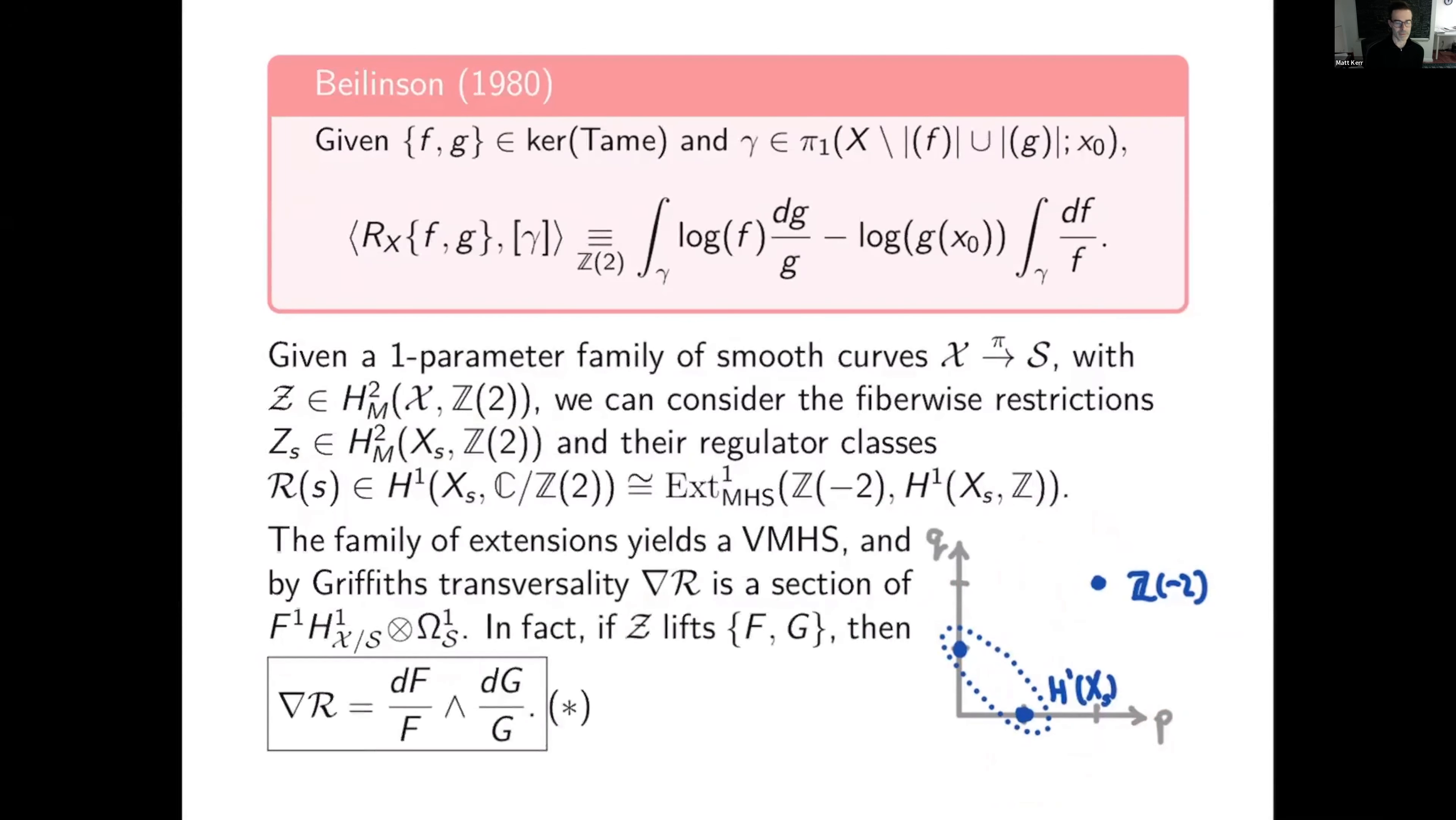This family of extensions yields a variation of mixed Hodge structure by Griffiths transversality applied to an F2 class that lives in F1. So you get something in F1 H1 tensor omega 1s when you apply Nabla to the family of regulated classes. So it just gives a family of holomorphic one forms. And in fact, if this z up here, this family of motivic classes, lifts a big symbol fg on the total space, then Nabla r is nothing more than d log f wedge d log g viewed as an element of this.